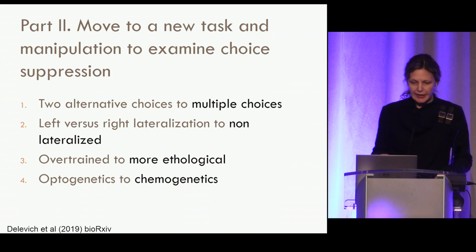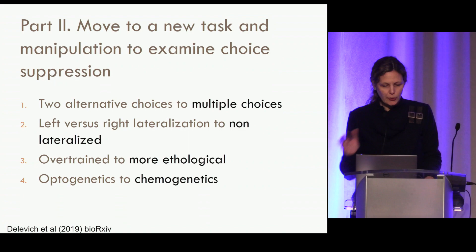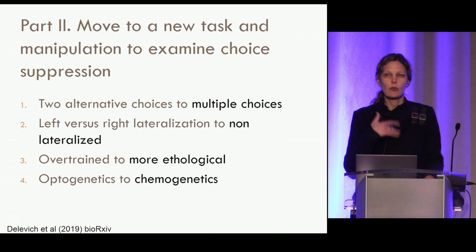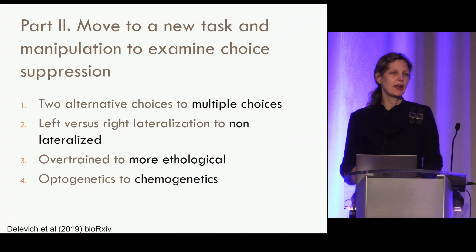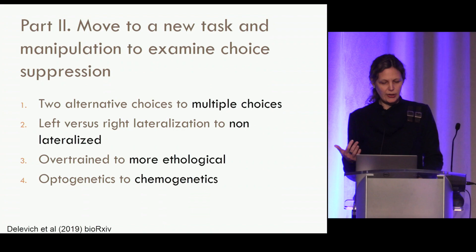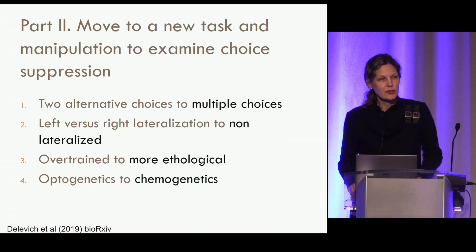Moving to part two, we decided to use a different task and a different manipulation. We're now just in the dorsal striatum examining choice suppression. We go from a two-alternative task with opponent left-right choices to a task with multiple choices that can't be reduced to left-right space — non-lateralized. The first task required several weeks of training with 1,000 trials per day; this next task is more ethological, trained in days with tens of trials rather than thousands.